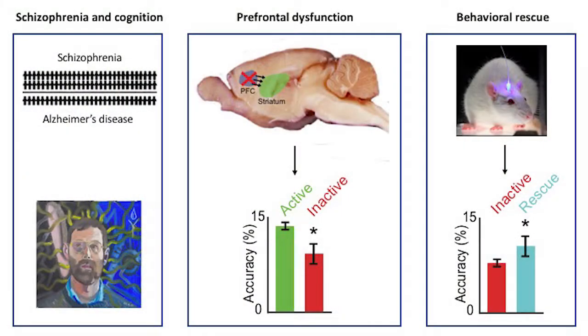The most exciting part of my thesis work is shown in this graph in the bottom right. Again, I have inactivated the prefrontal cortex, modeling this cognitive dysfunction. But I'm also stimulating with optogenetics this prefrontal cortex to striatum circuit. And amazingly, I can make animals better at this task and rescue this impaired cognition. My thesis suggests that the circuit between the prefrontal cortex and striatum is a promising target for treatment.